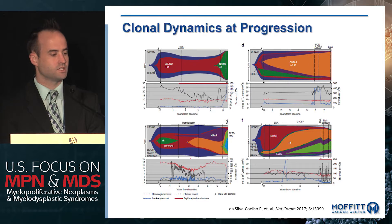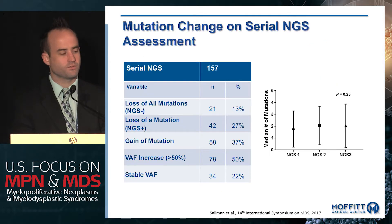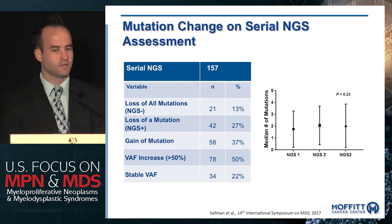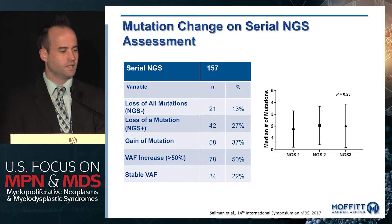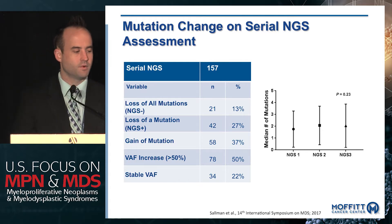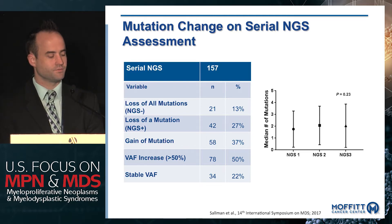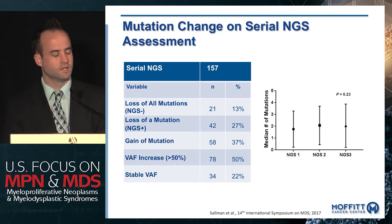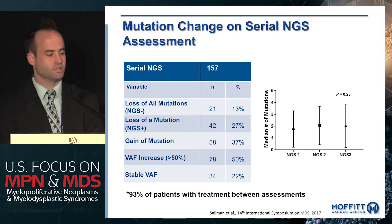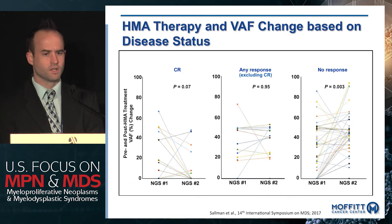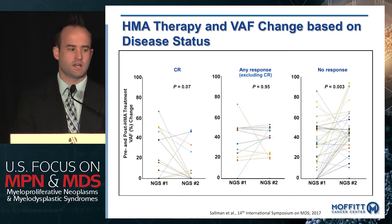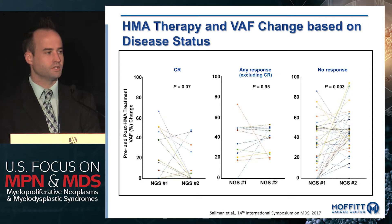We recently examined whether serial sequencing is prognostically relevant. In a cohort of 157 patients presented at the International MDS Symposium in Spain, approximately 13% of patients became fully NGS-negative over time. There was considerable heterogeneity: some patients acquired new mutations, some lost mutations, and others had stable disease. Ninety-three percent of patients received treatment between assessments, and we did not see a difference in the median number of mutations overall.